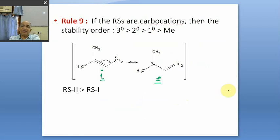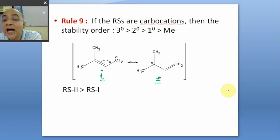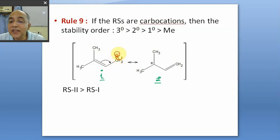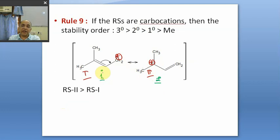Rule number nine: if the RSS are carbocations, then the stability order is tertiary greater than secondary greater than primary. For an allylic pattern, when you bring the electrons over, the plus charge moves to a secondary position — RS2 is a secondary carbocation. RS1 is a primary carbocation. So RS2 is more stable and more contributing than RS1.